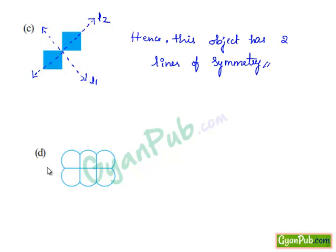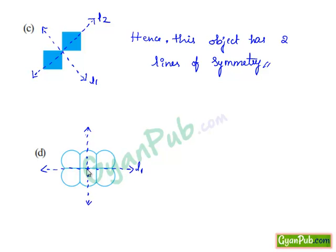Now if we see part D, considering this object, we shall draw the lines and see. Drawing a line horizontally divides the object with identical parts, hence this is considered a line of symmetry. If we draw vertically, it also divides this object identically, hence it is also a line of symmetry. The two other sides also divide the object identically. Hence this object has four lines of symmetry.